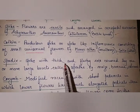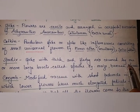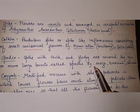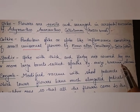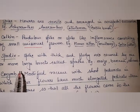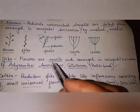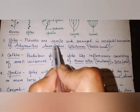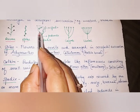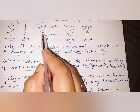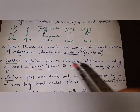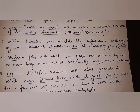Next is spadix: it has a thick and fleshy axis covered by one or more large bracts called the spathe. It is found in maize, banana, Colocasia, and other palms. The spathe is the large bract covering the spadix, and the peduncle supports the entire inflorescence.